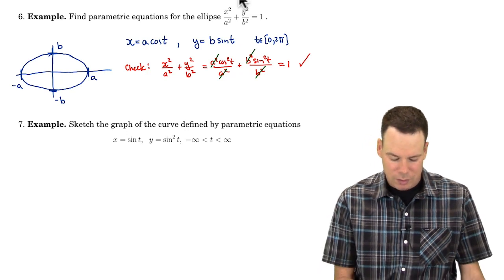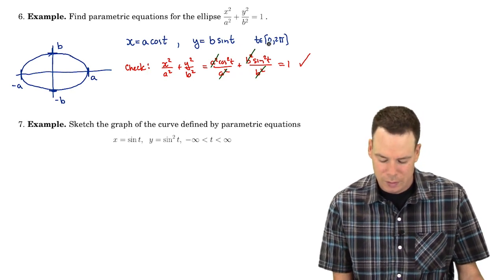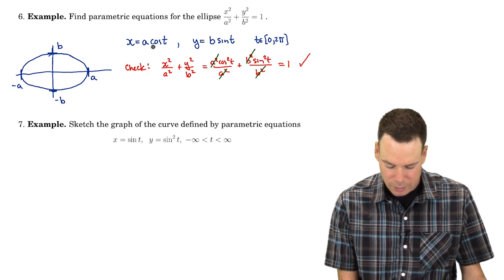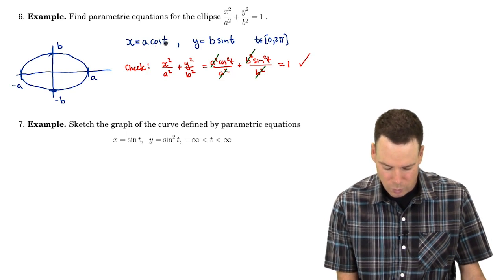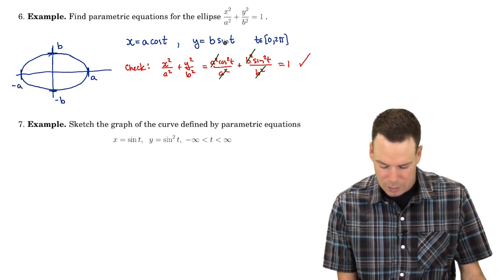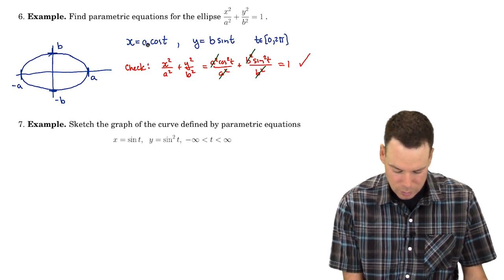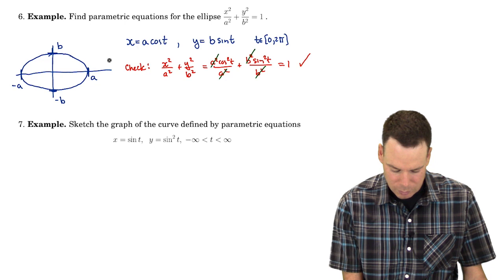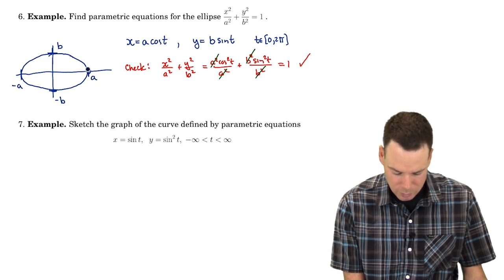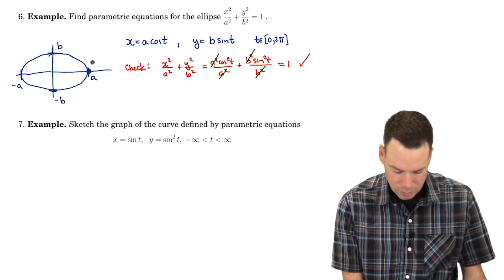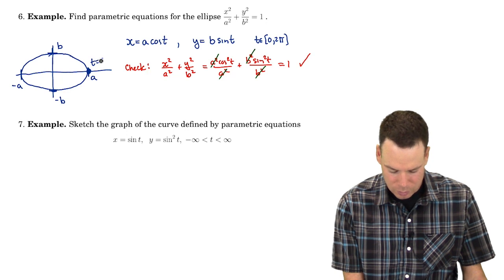Which direction is it parametrizing it? Where is the initial terminal points? So when t is 0 I get cos of 0 which is 1 times a, and b times sine of 0 which is 0. So cos of 0 is 1 times a so we're right here at (a, 0), so that's t equals 0.